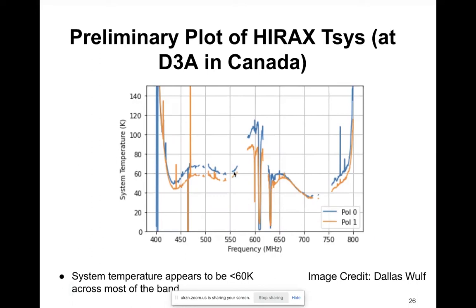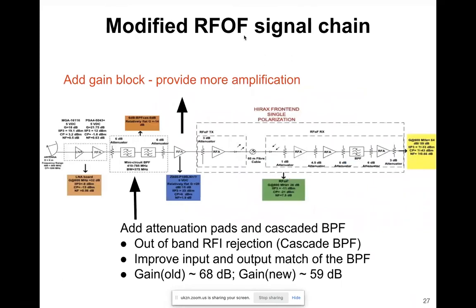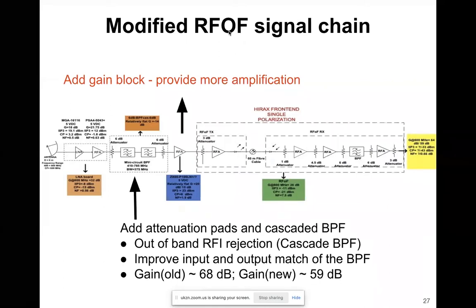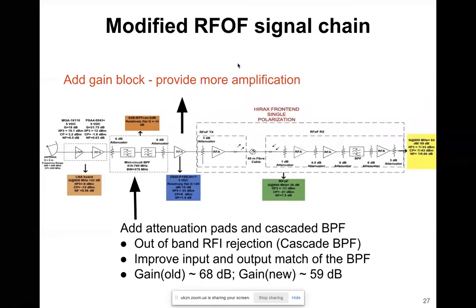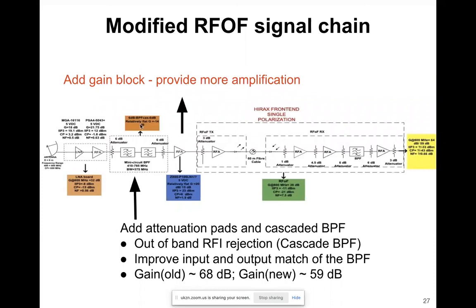This is our plan for modifying the RF-over-fiber signal chain. We plan to add two filters between the feed and the RFoF unit to mitigate out-of-band RFI. We also plan to add attenuators to improve the input and output match of the filters we've added.